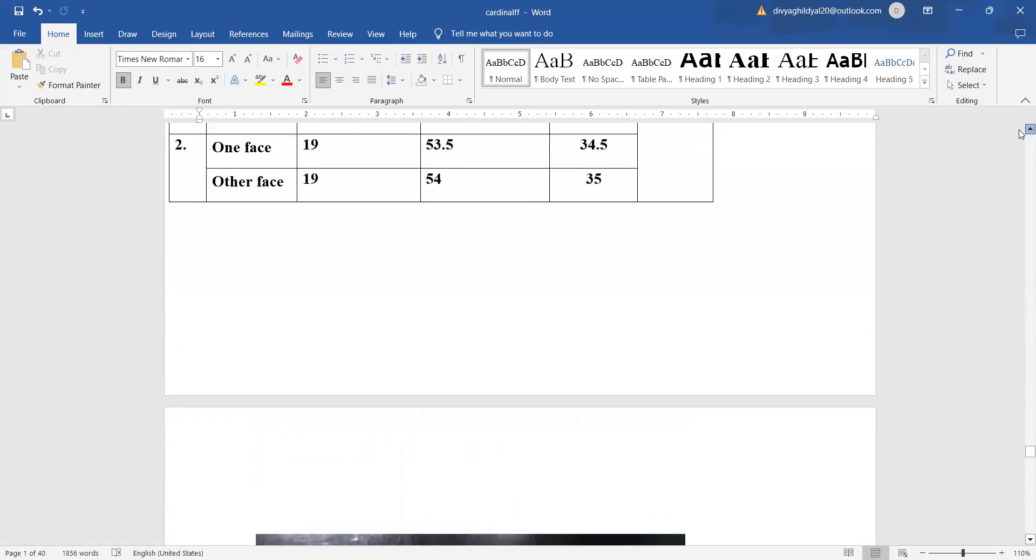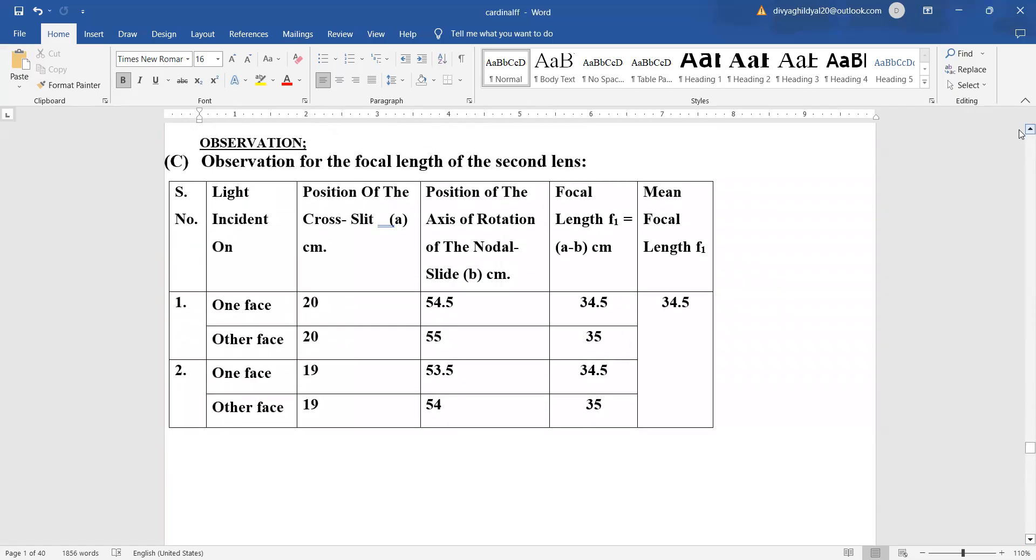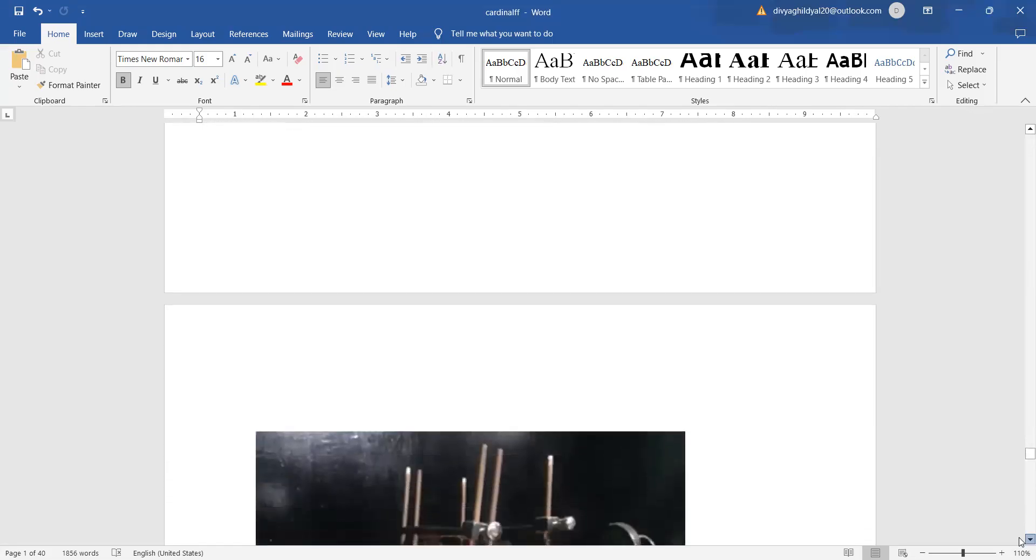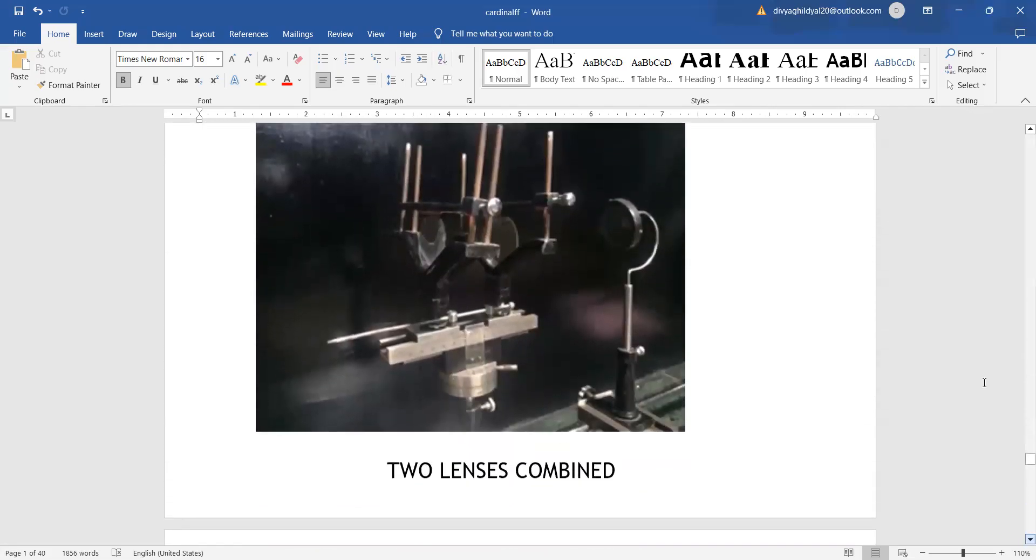For the third table, we will combine lenses - this is for the second lens also. We will do it in the same manner and get the focal length of the second lens. Then, in the third observation table, we will put both lenses in the nodal slide setup. Here is the plane mirror. We will decide the distance between the lenses, like if we want to keep 4 cm and 8 cm.